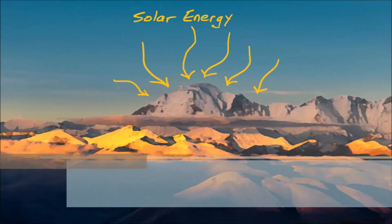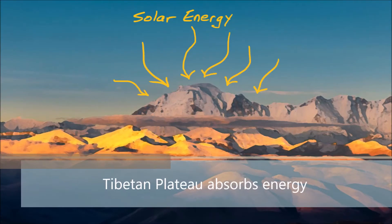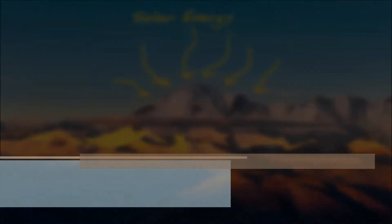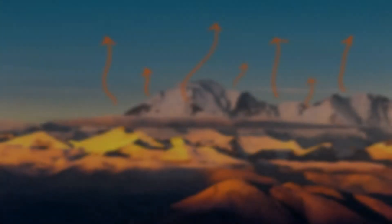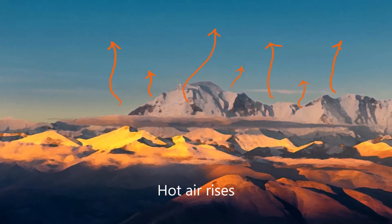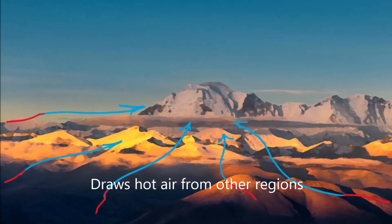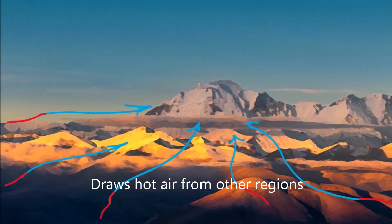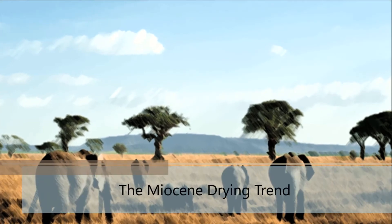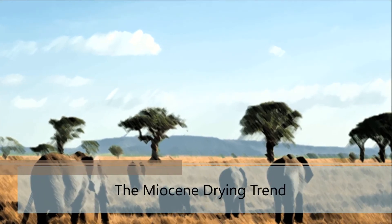The Tibetan Plateau absorbs solar energy and causes global convection currents. As hot air rises off of the Tibetan Plateau, hot air from other regions is pulled back into the Plateau region. This process pulled moisture out of East Africa and produced drier forests.